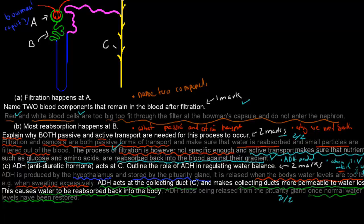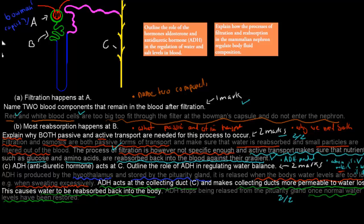So where do these questions come from? They come from these dot points. Outline the role of the hormone aldosterone and antidiuretic hormone. So we've just outlined the role of the antidiuretic hormone in this question. The antidiuretic hormone in regulating water and salt levels. But for ADH, it's only to do with water levels. So this is question C comes from this one.